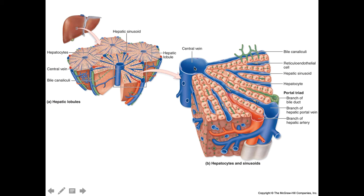By the time the blood reaches the central vein, it accumulates into the hepatic veins, which eventually drain into the inferior vena cava. The green passageways visible in the figure are bile canaliculi — essentially extracellular spaces. Hepatocytes produce bile, which passes through these canaliculi and works its way to the branch of the bile duct, eventually being carried either to the gallbladder or to the small intestines via the larger ducts.